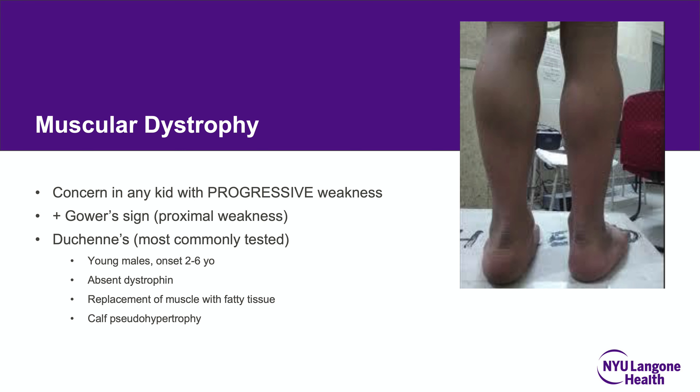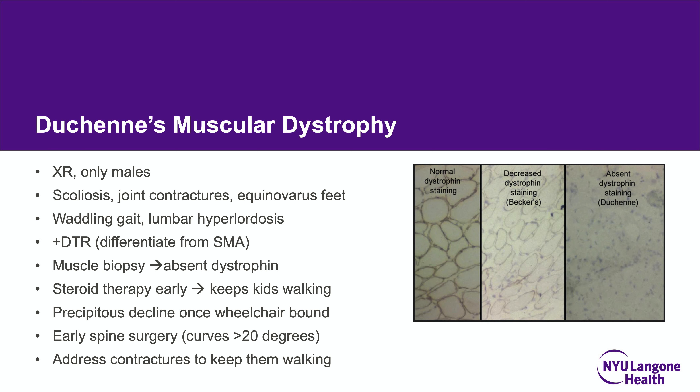Muscular dystrophy should be a concern in any child with progressive weakness. A Gower sign is indicative of proximal weakness. Duchenne's is most commonly tested — it affects young males with onset at 2 to 6 years old, involving an absent dystrophin protein and calf pseudohypertrophy. It is X-linked recessive, presenting with a waddling gait and extreme lumbar hyperlordosis. Deep tendon reflexes are present, which helps differentiate it from spinal muscular atrophy.